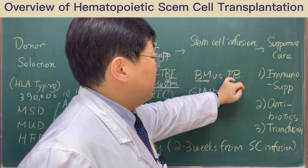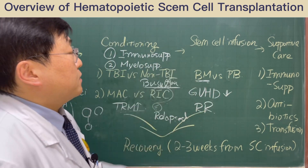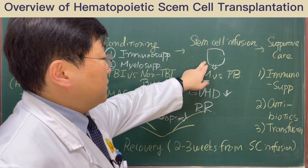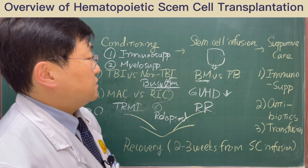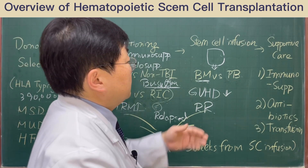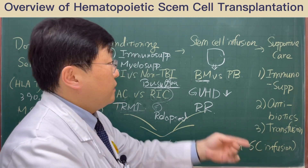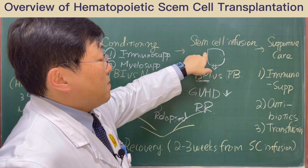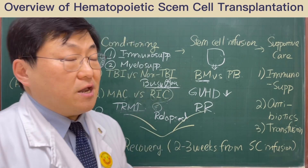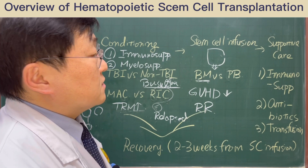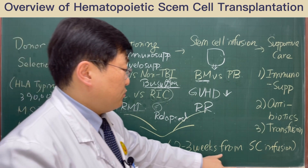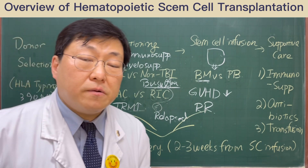When we collect the blood stem cells from the donor's peripheral blood, the stem cells are delivered as a blood product, and the patient receives this stem cell product in a manner similar to receiving a blood transfusion. When the patient receives the stem cells, they move to the patient's marrow, stabilize there, grow, and produce normal red blood cells, white blood cells, and platelets. It usually requires two or three weeks from stem cell infusion to achieve full recovery of the blood cell counts.